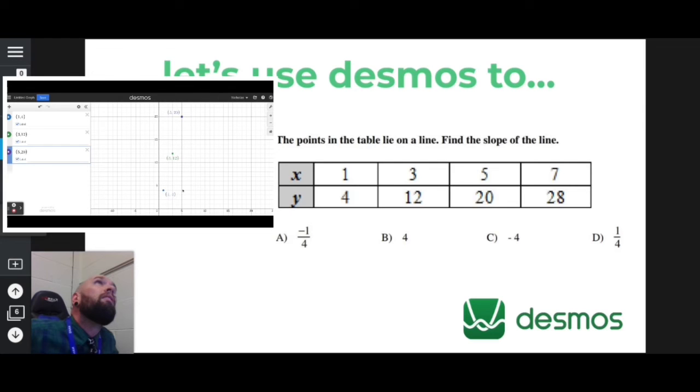So if I want to find the slope, these lines connect to make a positive line, a positive slope. I go up 1, 2, 3, 4, 5, 6, 7, 8, right 1, 2, and positive 8 divided by 2 is going to be positive 4. That's my slope.